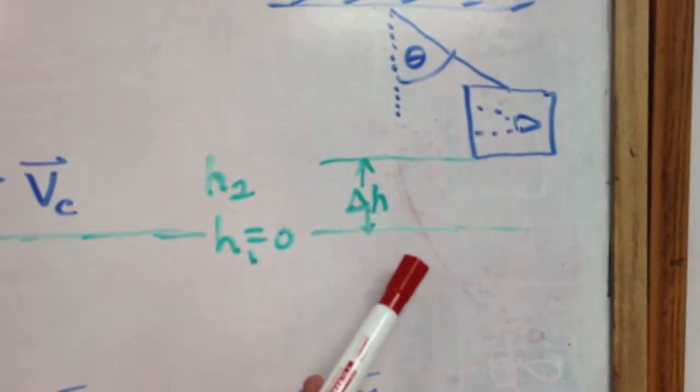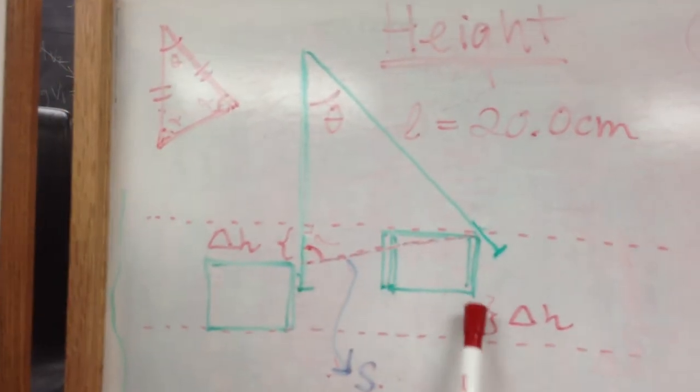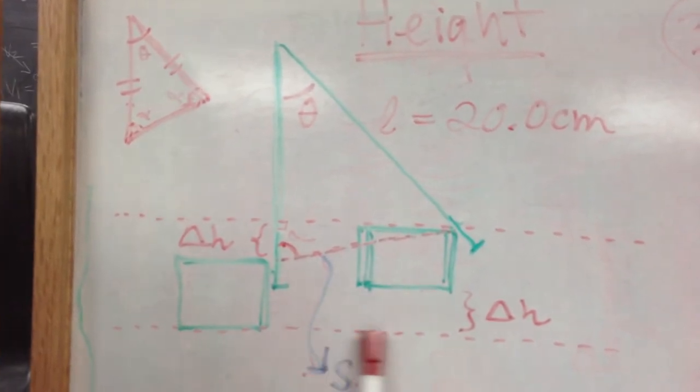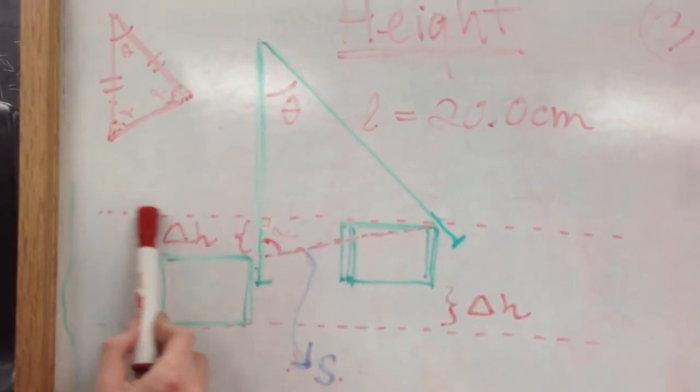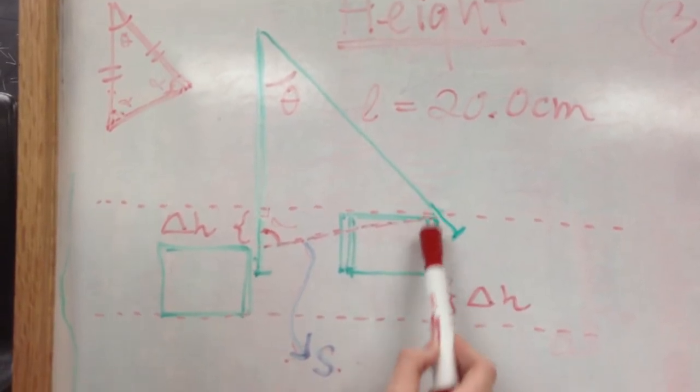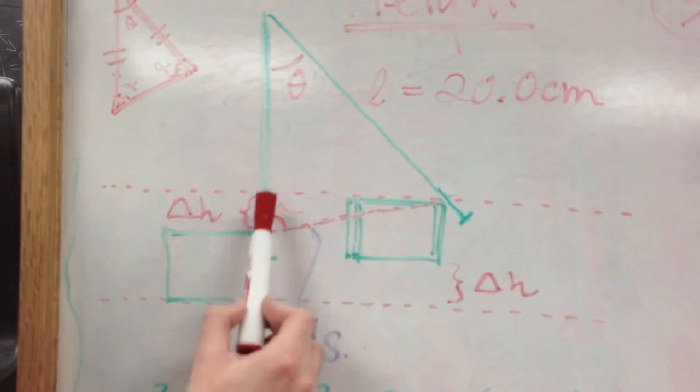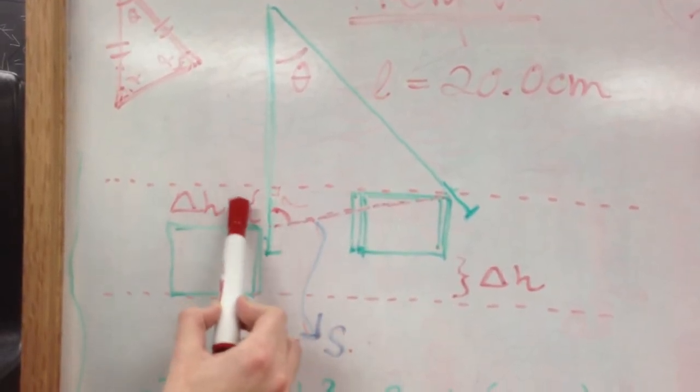So this height over here, imagine you have an imaginary line there and another imaginary line going to the top of the box. This height here plus the side of the box is the same as this length, the side of the box plus the height. So we can say that this part is the height.